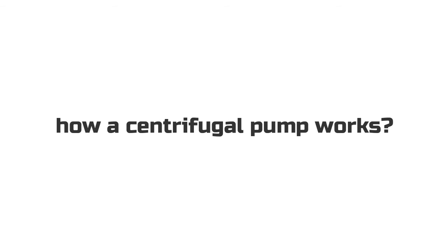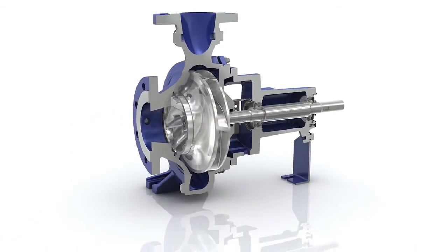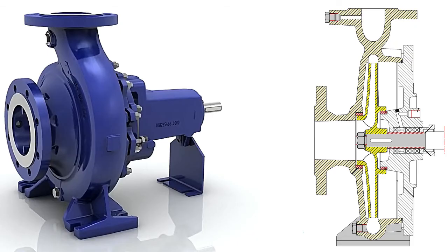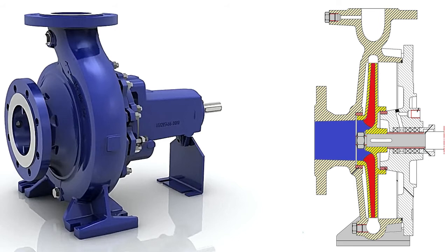Like most pumps, a centrifugal pump converts rotational energy, often from a motor, to energy in a moving fluid. A portion of the energy goes into kinetic energy of the fluid. Fluid enters axially through the eye of the casing, is caught up in the impeller blades, and is whirled tangentially and radially outward until it leaves through all circumferential parts of the impeller into the diffuser parts of the casing. The fluid gains both velocity and pressure while passing through the impeller.